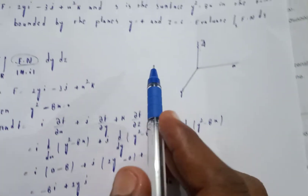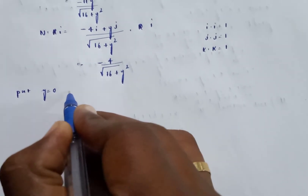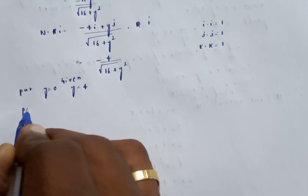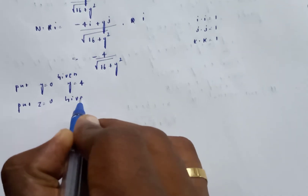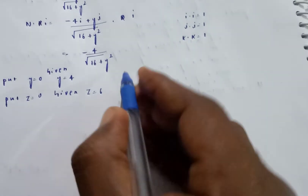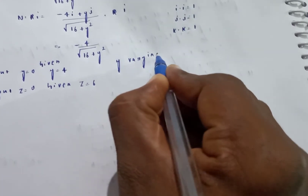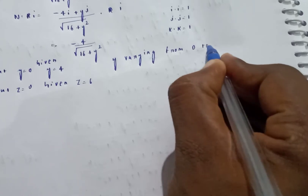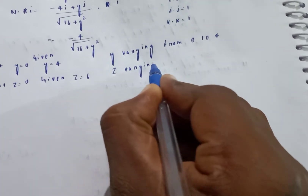Setting up the limits: y varies from 0 to 4, z varies from 0 to 6. The surface integral becomes: double integral of f dot n divided by n dot i, into dy dz.